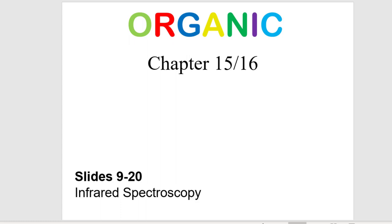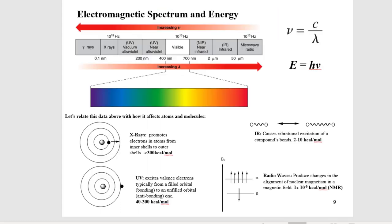We've discussed mass spectrometry and how it can give us the mass of a molecule and sometimes even the molecular formula. Now let's look at other methods that use energy — the spectroscopy instruments. I want to go over the energy scale to give you an idea of what we're dealing with. One instrument uses infrared energy, one uses UV-visible energy, and one uses radio frequency energy.